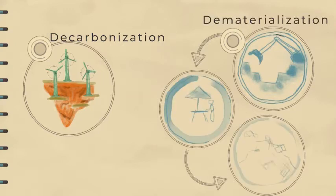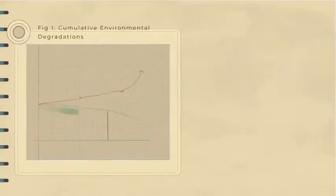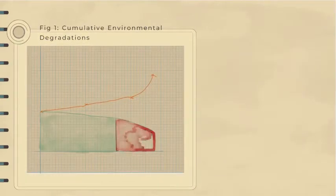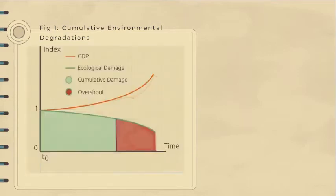We normally measure decoupling by looking at the effect of GDP growth on the rate of extraction or pollution. This is easier to measure and understand, but it is important to remember that there is an ecological limit on the total amount of extraction or pollution rather than the rate. It doesn't matter if we emit less pollution each year if the cumulative emissions will overshoot some limit.